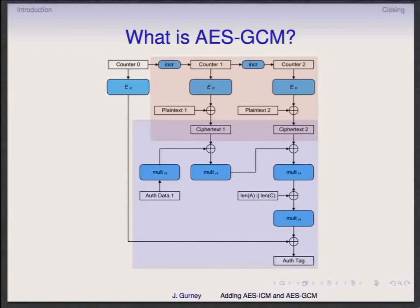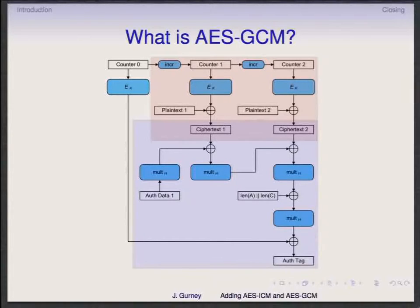What specifically is AES-GCM? AES-GCM is a combined authenticated encryption with associated data mode. The encryption part uses a counter, so the EK — the AES step — can be done completely independent of each other block. The other part is the authentication part with associated data, which uses the same key and outputs an auth tag. The length of the auth tag can be changed, but it is recommended to be at least 64 bits; if you go shorter, an attacker would likely be able to forge it. You could do as much as 128 bits.